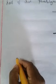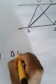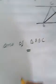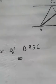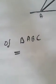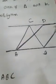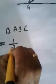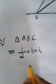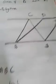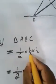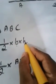To prove this, let me calculate the area of triangle ABC. The area of a triangle is given by the formula: half into base into height. The base of triangle ABC is AB, so area of triangle ABC equals half × AB × h.